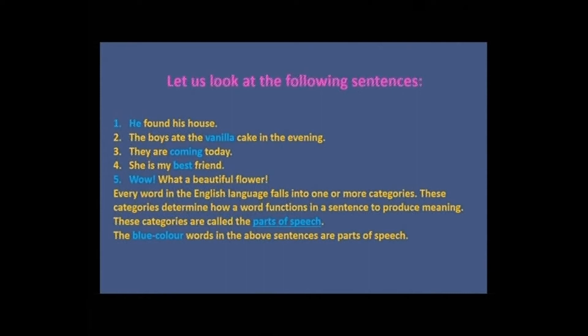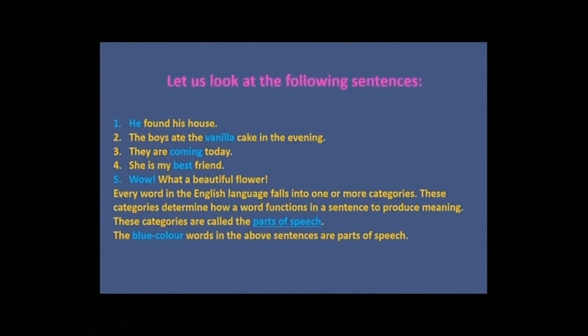Every word in the English language falls into one or more categories. These categories determine how a word functions in a sentence to produce meaning. These categories are called the parts of speech. The blue color words in the above sentences are parts of speech — such as He, Vanilla, Coming, Best, and Wow. Every word in the English language belongs to some category, and these categories are called parts of speech.